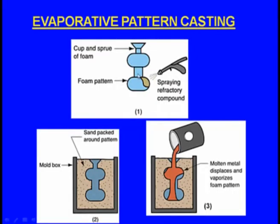Because the pattern is evaporating, that is why it is known as evaporative pattern casting. Here we can see the pattern — this is the cast component we require — and in a similar way, we have made a polystyrene pattern.